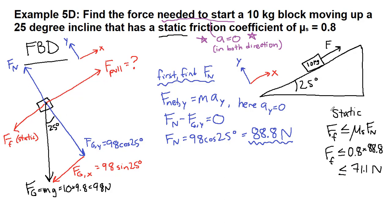So it's less than or equal to 71.1 newtons. Now, here's the other interesting thing here. The force of gravity in the x direction is 41.4 newtons, the 98 sine 25 degrees. So if we were not pulling or touching this block at all, it would sit on this ramp.